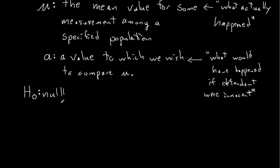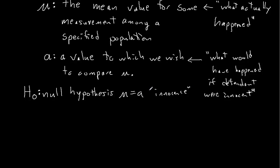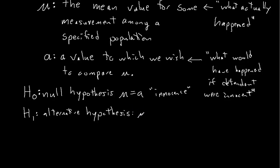H sub 0 is called the null hypothesis. The null hypothesis is that what actually happened is what would have happened if the defendant were innocent — in other words, it's innocence. If the actual mean value among the population is equal to A, then that's what we mean to be innocent. What do we mean to be guilty? That's called the alternative hypothesis, H sub 1, and that is that mu is not equal to A — which is analogous to guilt.